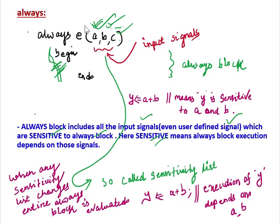When any signal in the sensitivity list changes — either A, either B, or either C — then the entire always block is evaluated immediately. This is the reason it is called the sensitivity list, because these signals are sensitive to the always block. For example, if we write Y = A + B, then Y is sensitive to A and B, meaning the execution of Y depends on A and B.